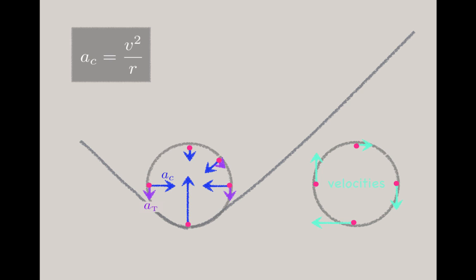By the way, the tangential and centripetal accelerations are really just components of the overall acceleration. If you want the total acceleration of the particle, you can always add them together like this.